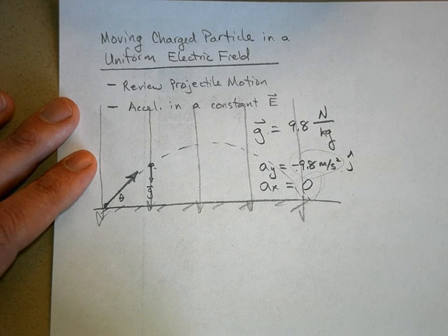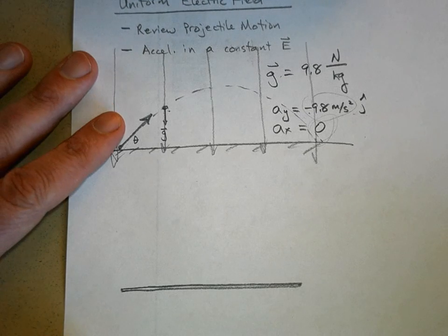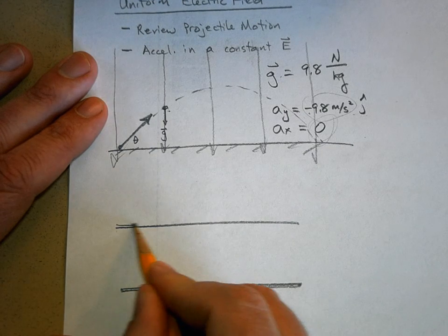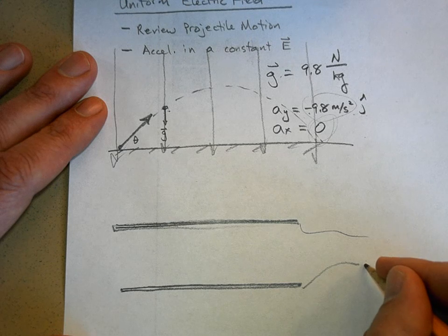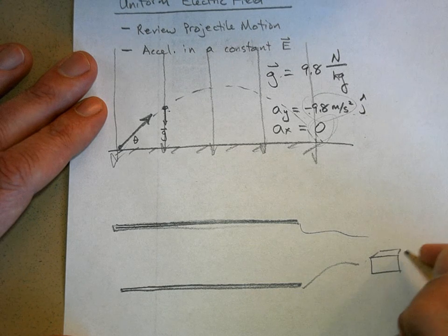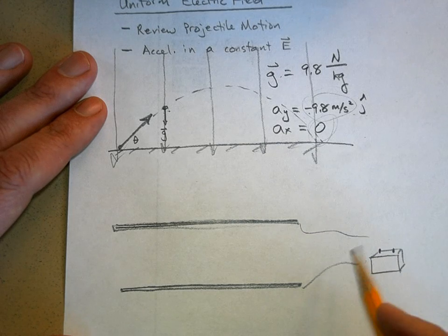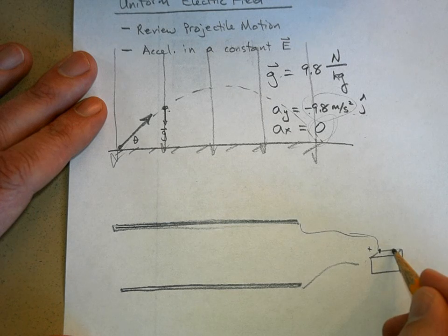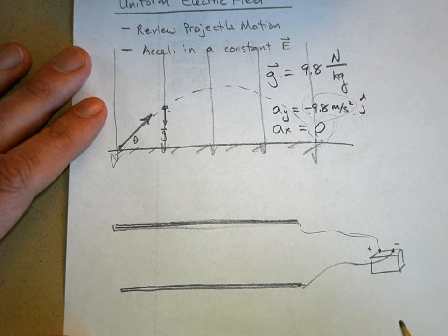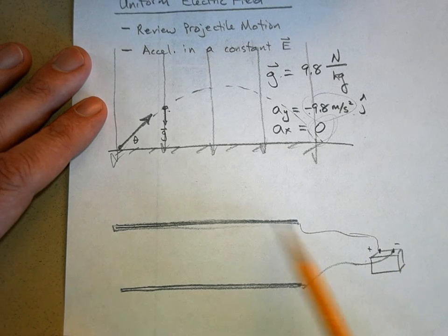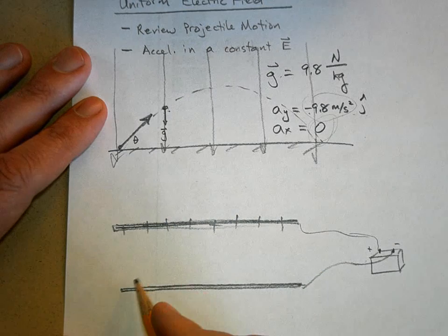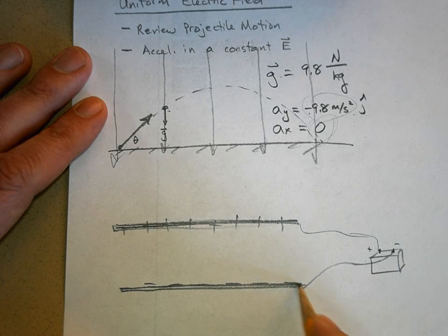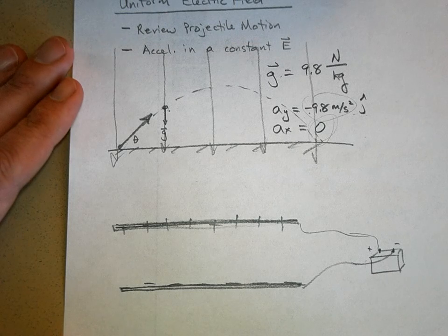Take two plates of metal and hook them up to a battery - like a little car battery. Make one the positive terminal and one the negative terminal. What happens is this forces a positive charge onto one plate, spreading out, and you'll have a negative charge on the other plate. This creates an electric field between the plates.